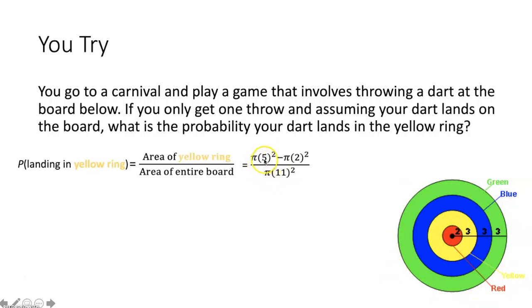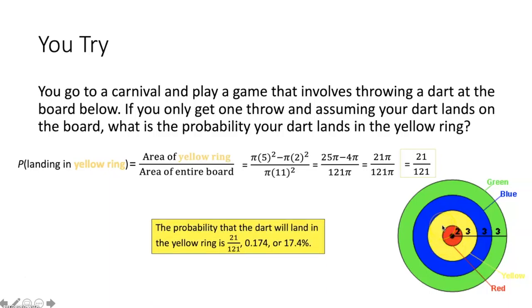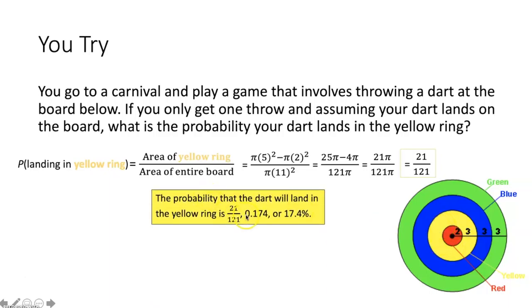Squaring and subtracting in the numerator: 25 pi minus 4 pi is 21 pi. The pi terms cancel, leaving 21 over 121. So the probability your dart lands in the yellow ring is 21 over 121, or 0.174, or approximately 17.4%.